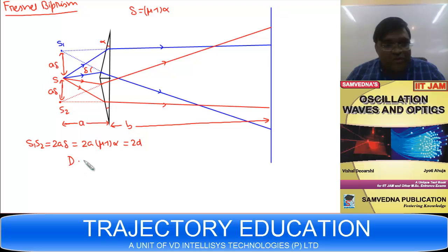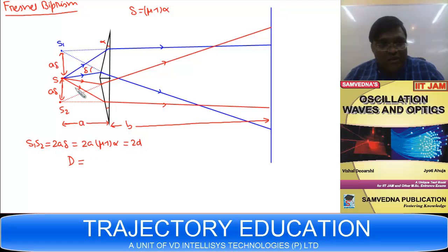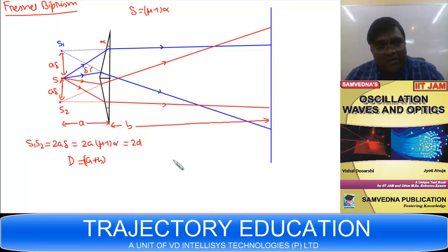So S1 and S2 are two virtual sources separated by 2Aδ, that is 2A(μ−1)α. This is analogous to the slit separation 2d in Young's double slit. The problem then becomes very similar to Young's double slit, where the effective distance from the virtual sources to the screen is A + B.